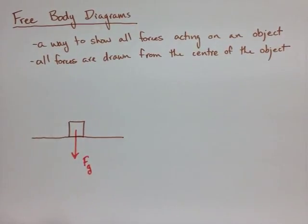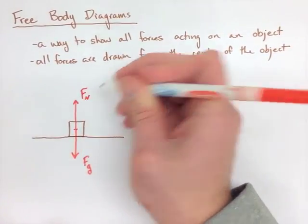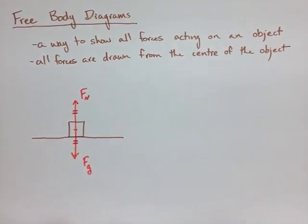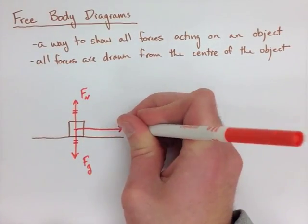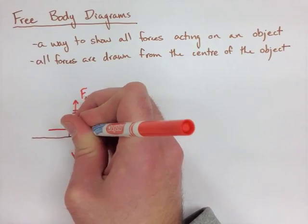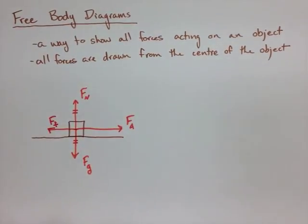We always have the force of gravity acting, and then if it's in contact with a surface, we have the normal force. These two forces are equal in magnitude in this case. We have an applied force here, and then the force of friction.